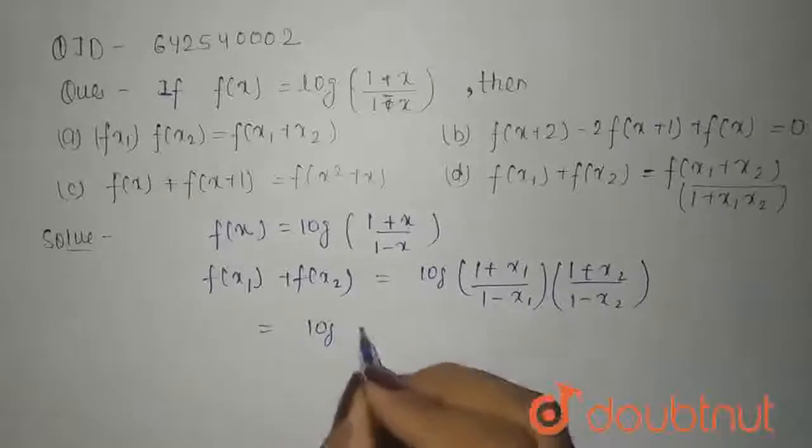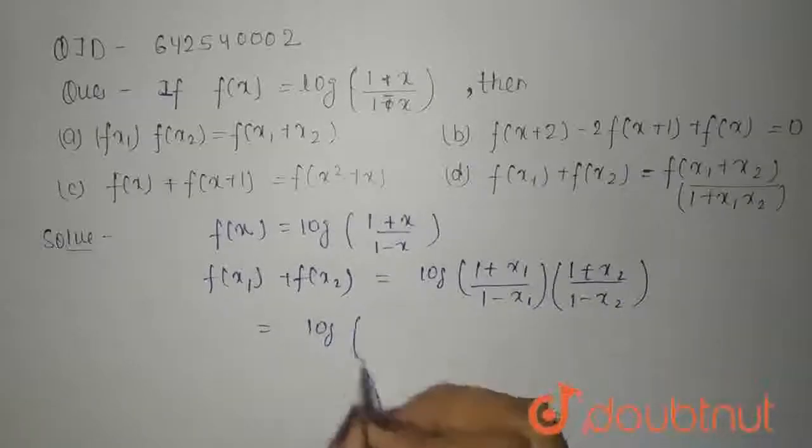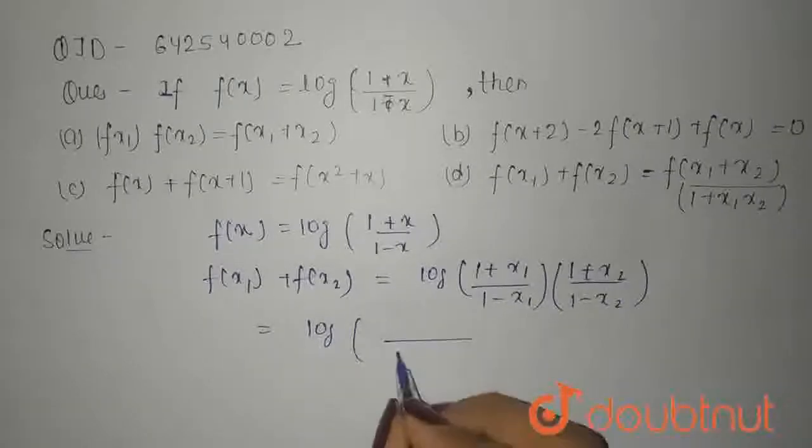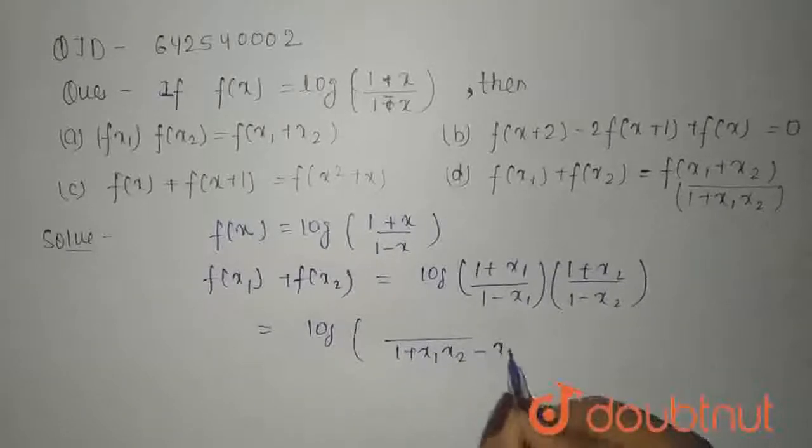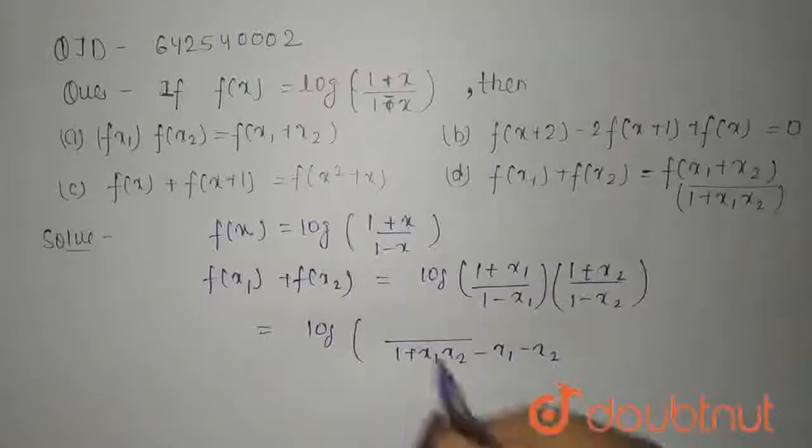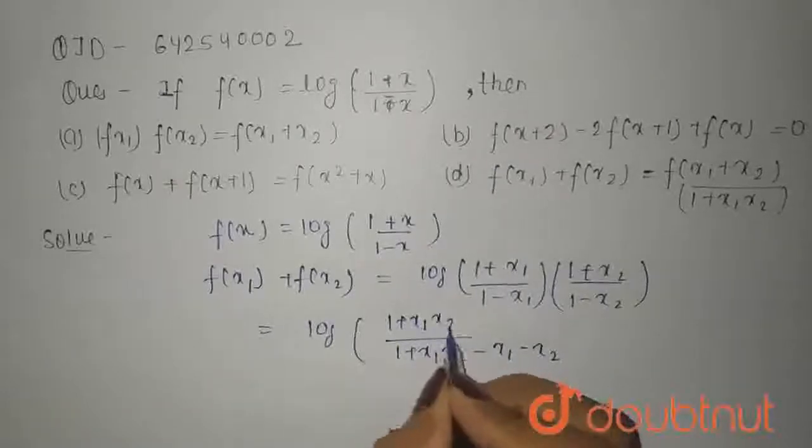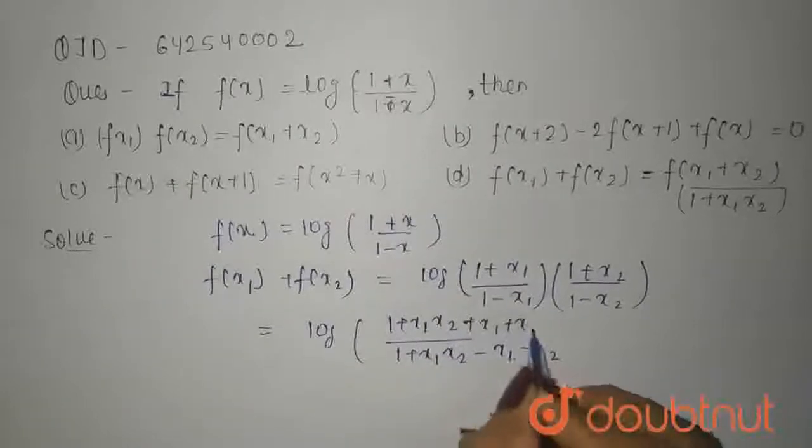Log, by taking log property, first of all take LCM, that is nothing but 1 plus x1 x2 minus x1 minus x2. 1 plus x1 x2 plus x1 plus x2. Taking LCM or multiplying both.